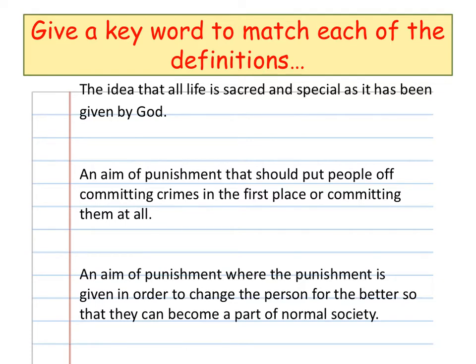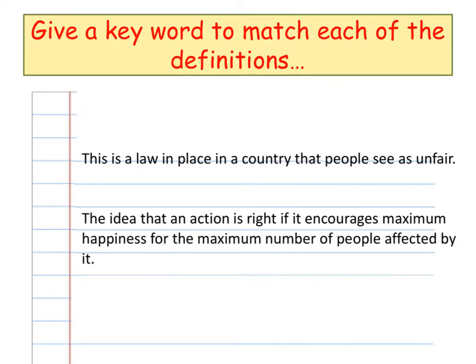Number sixteen: an aim of punishment where the punishment is given in order to change the person for the better so that they can become a part of normal society again. Number seventeen: this is a law in place in a country that people see as unfair. Number eighteen: the idea that an action is right if it encourages maximum happiness for the maximum number of people affected by it.